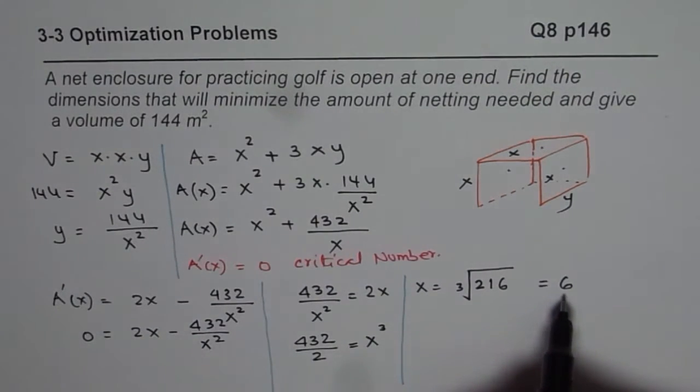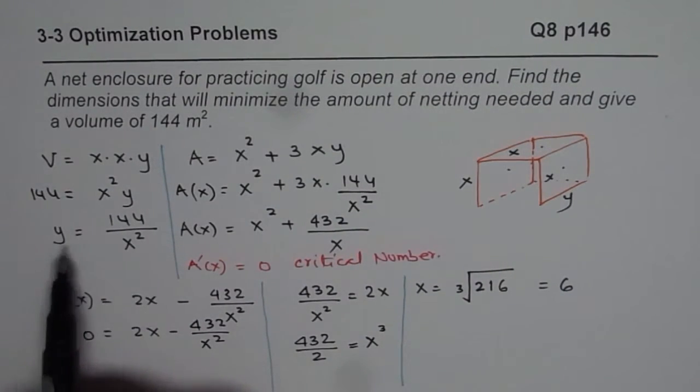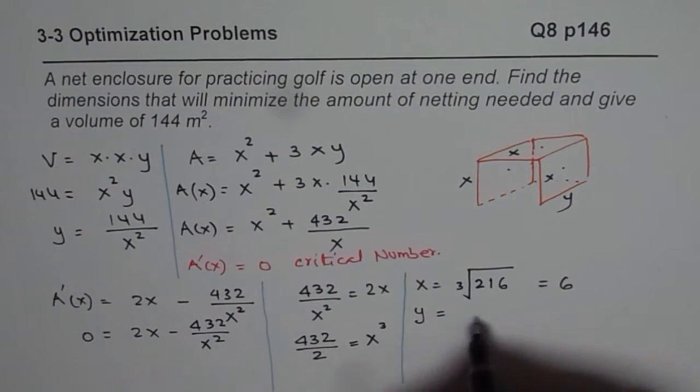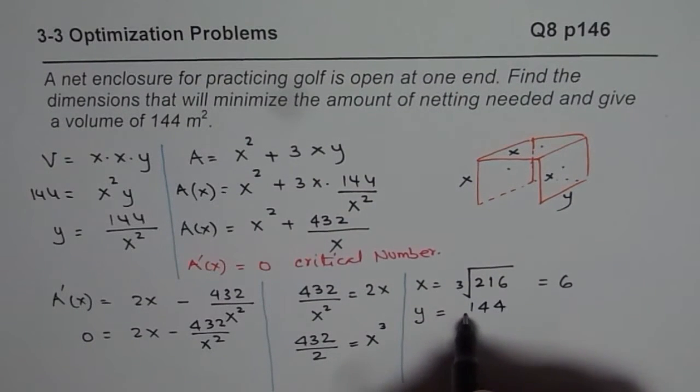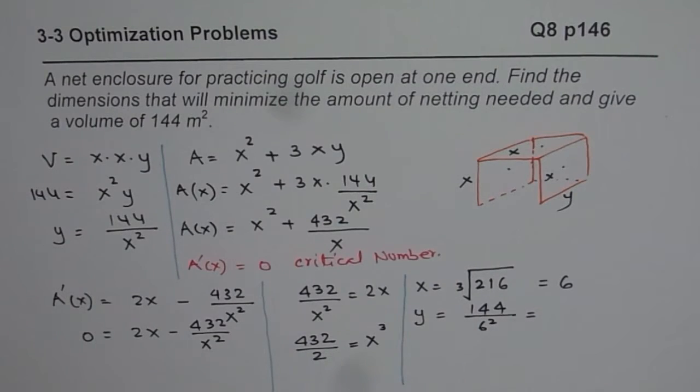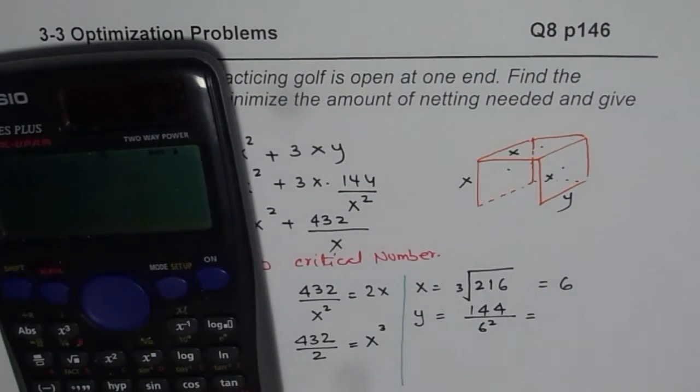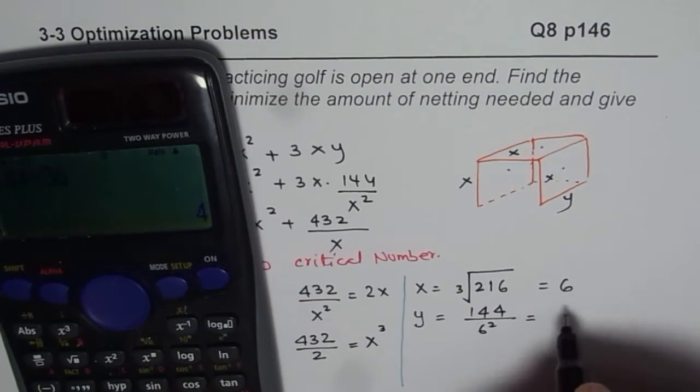Now, once you find x as 6, then you can find what y is. So y will be equals to 144 over 6 square, 36. So we'll divide 144 by 36, that is 6 square, so we get 4.